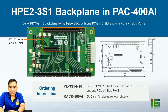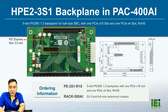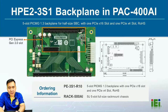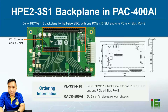The backplane inside the PEC 400 AI is the HPE2, which supports one PCIe x16 slot and one PCIe x4 slot for installing various PCIe cards such as accelerator cards, VPU, and GPU cards. The PCIe x16 slot is also downward compatible with x8, x4, and x1 signal golden finger interfaces.